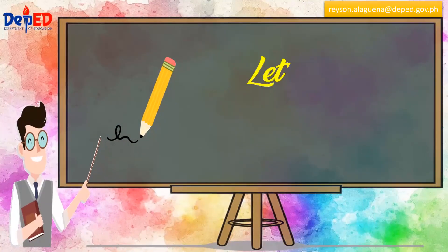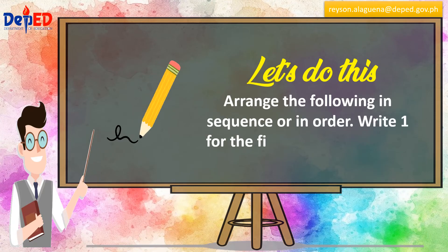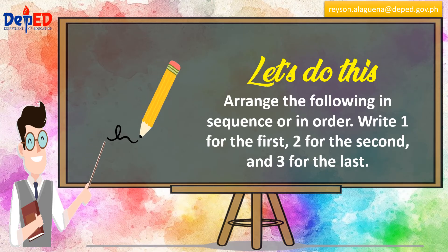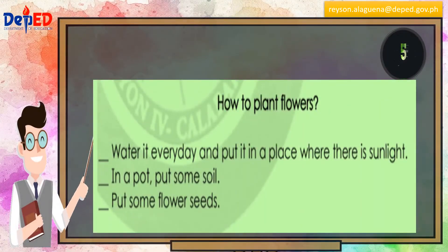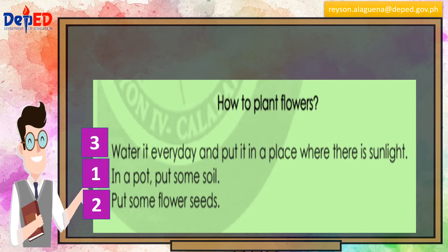Let's do this. Arrange the following in sequence or in order. Write one for the first, second for the second, and three for the last. How to plant flowers: First, put some soil in a pot. Second, put some flower seeds. Third, water it every day and put it in a place where there is sunlight.